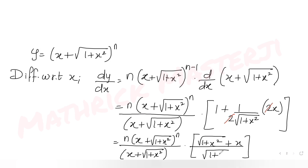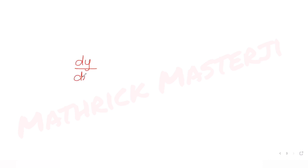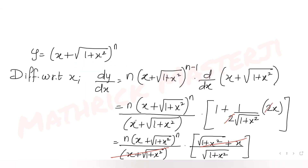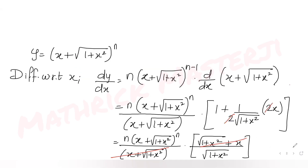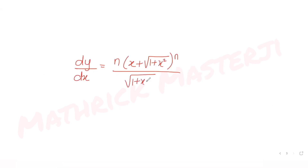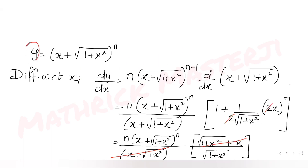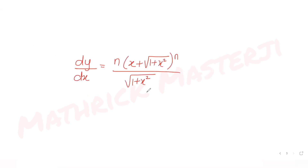Seeing that this and this cancel, dy/dx equals n times (x + √(1 + x²))^n divided by √(1 + x²). Now, (x + √(1 + x²))^n is equal to y, so taking √(1 + x²) to the other side, we get √(1 + x²) times dy/dx = n·y.